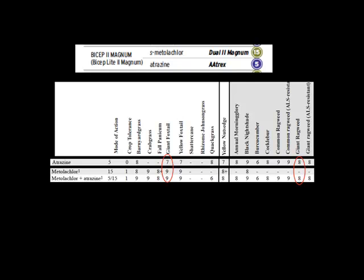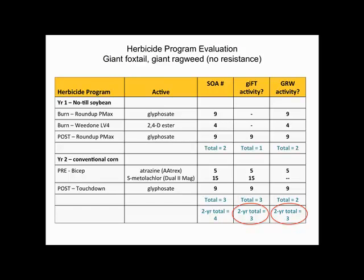For premixes, sometimes an extra step is necessary. For giant ragweed, metolachlor plus atrazine (the generic for Bicep) is rated an 8, atrazine is also rated, and metolachlor is a dash — telling you atrazine is the component with giant ragweed activity. For giant foxtail, atrazine gets a 7 and metolachlor a 9, so both have activity there. For giant ragweed: it's emerged at burndown, so glyphosate and 2,4-D are active, plus glyphosate post, then just atrazine in corn pre and glyphosate post. That's two sites of action in year one, two in year two, but a total of three — not a lot of diversity.